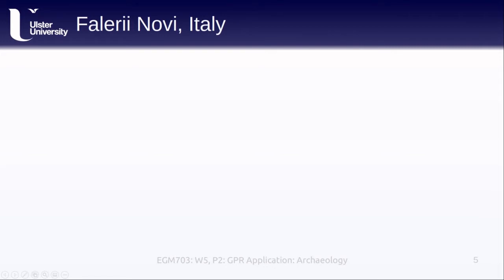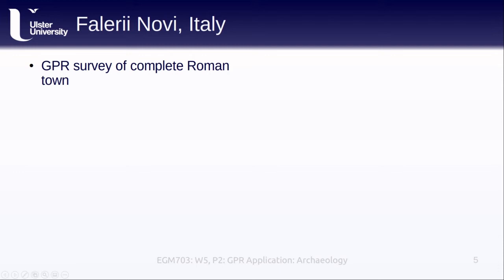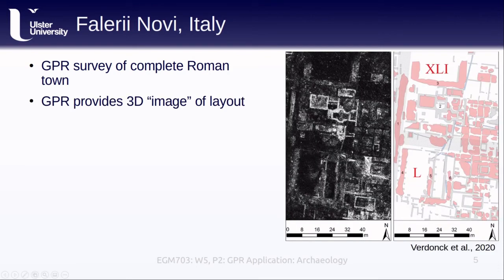The first study that we'll look at is a GPR survey of a complete Roman town called Valeria Novi, located in present-day Lazio, Italy. The authors used a multi-channel GPR array with 15 antennae operating at 500 megahertz with a horizontal grid spacing of 0.125 meters, and they made two passes in order to reduce the grid spacing to 0.0625 meters. The GPR grid provides a 3D image of the layout of the town. On the left, we can see a map of the site with the different observed features outlined by hand in GIS software.